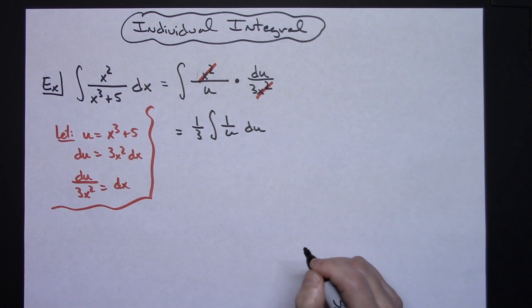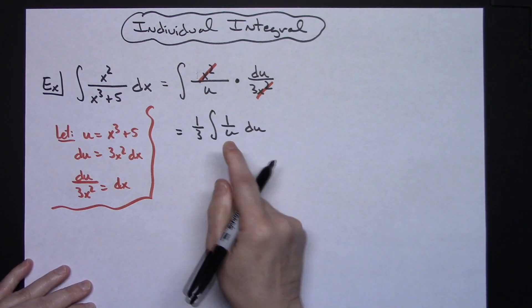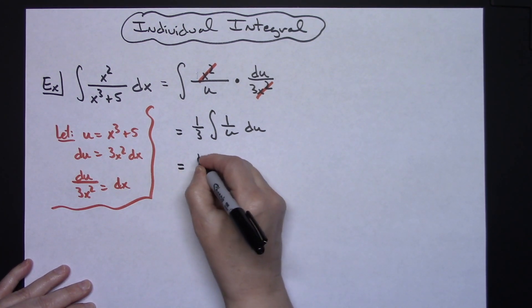And hopefully if you are at u-substitutions you definitely know that you have this integral memorized as the natural log of absolute value of u. So that integrates very straightforward there.